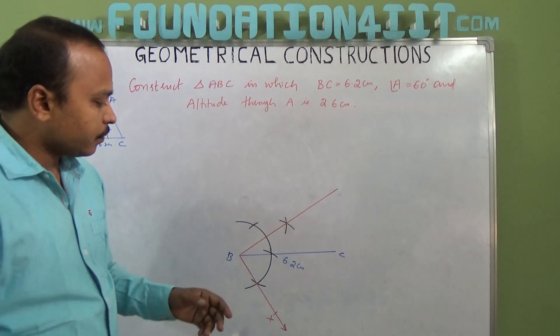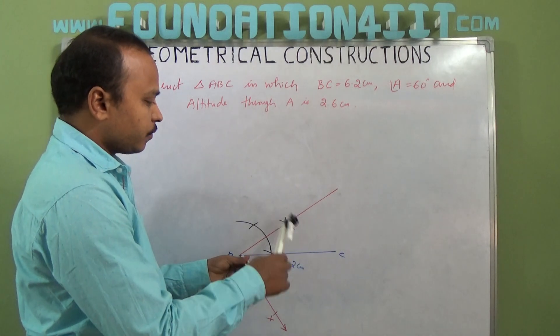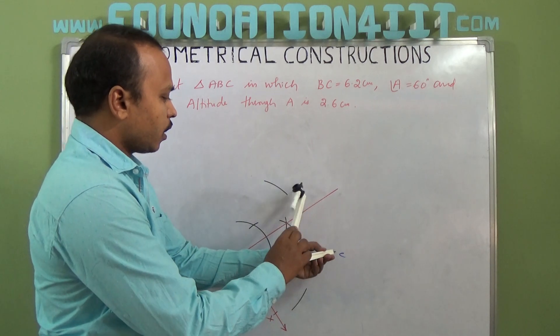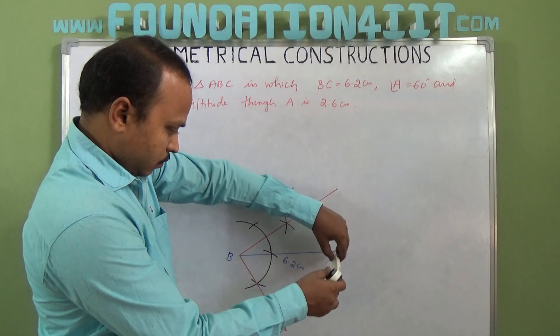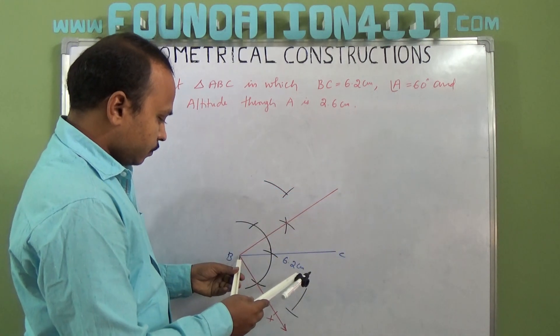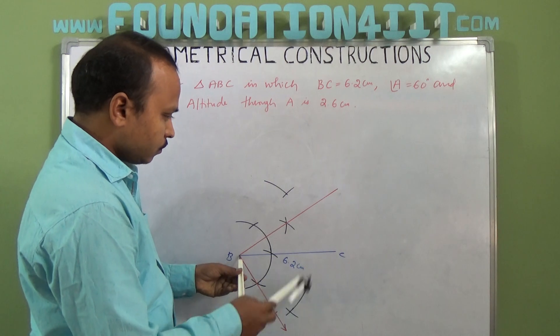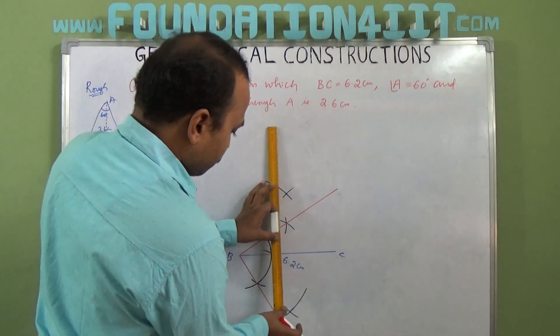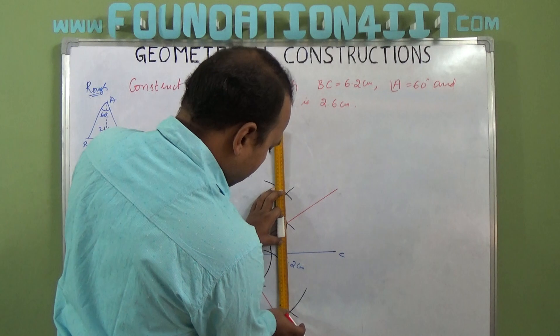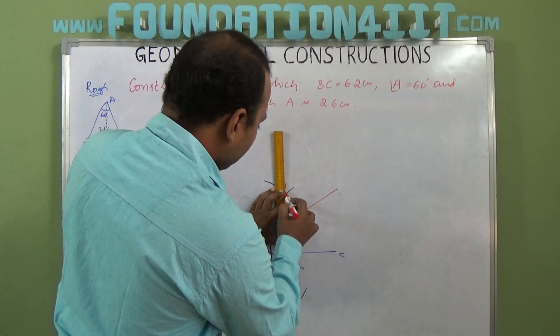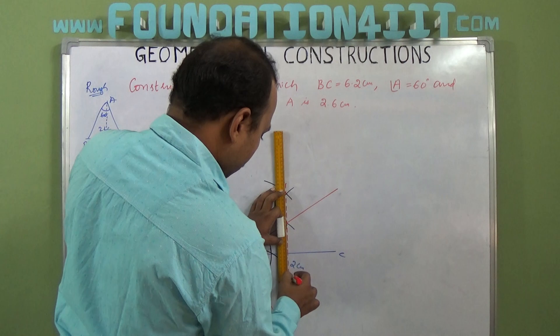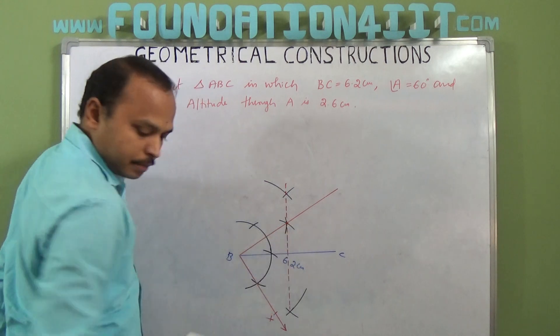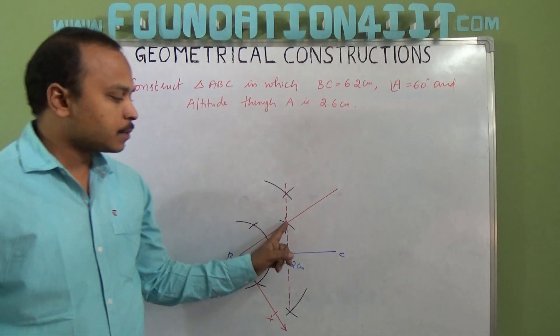Now also perpendicular bisect BC. Take more than half the length, draw an arc above and below from both B and C, and draw the perpendicular bisector. Where it intersects, this is the center point.